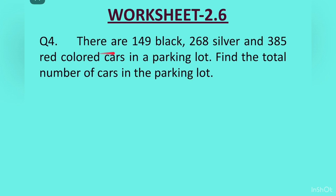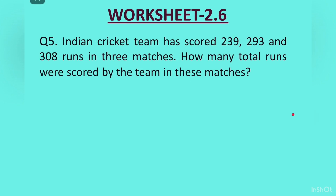Question 4. There are 149 black, 268 silver and 385 red colored cars in a parking lot. Find the total number of cars in the parking lot. Here, 3 types of cars are given and we have to find the total number. Question 5. Indian cricket team has scored 239, 293 and 308 runs in 3 matches. How many total runs were scored by the team in these matches?